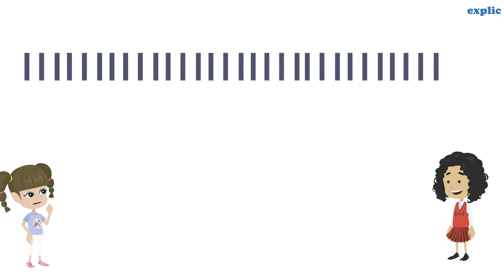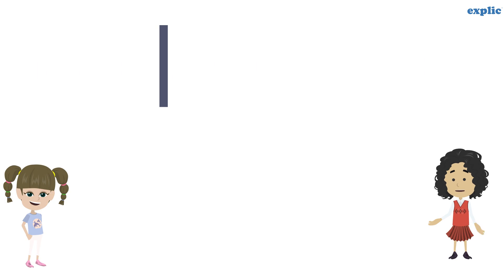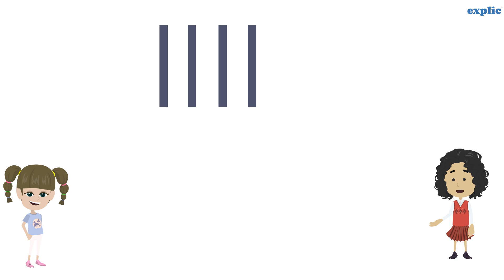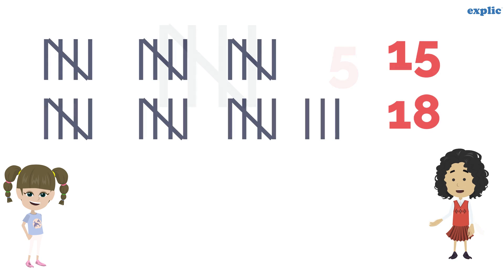Isn't it a little difficult to count if we have more lines? What if we make a mistake in counting? For that, every fifth line is drawn across the previous four lines. It will make counting easy and convenient. Now it's easy to count big numbers like 15 or 18.